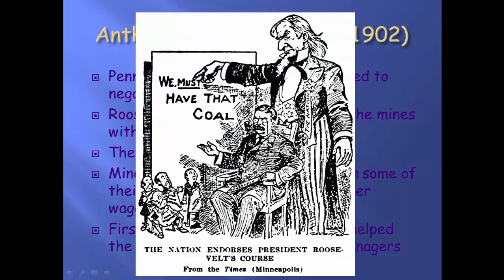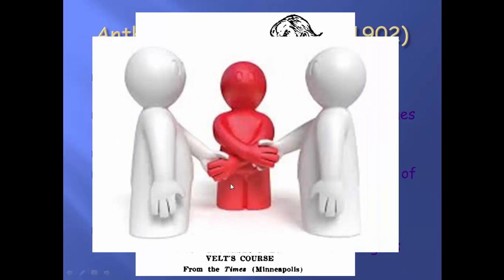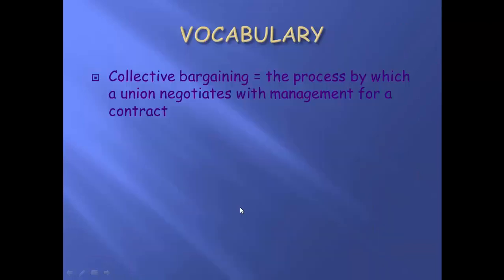Why is Teddy getting involved? Because Uncle Sam needs coal, so he wants to end the strike and get those coal workers back to work. The idea of arbitration is both sides agree going in that whatever the third party decides, they'll both do it. Collective bargaining is something that was done in the coal strike — it's the process of a union or a bunch of workers negotiating with owners for demands for a contract.